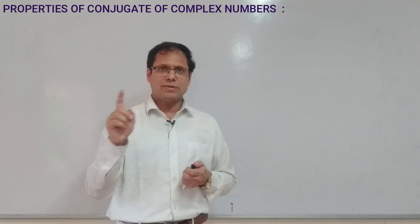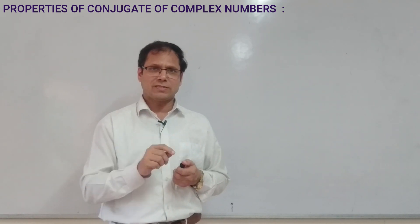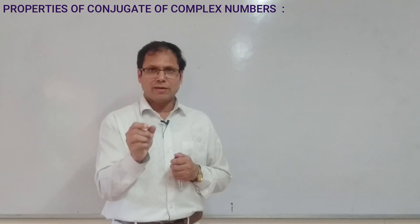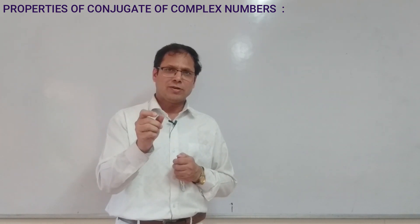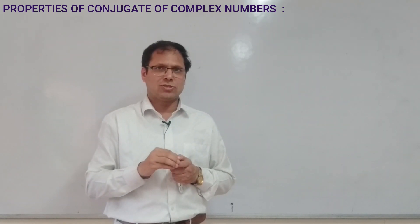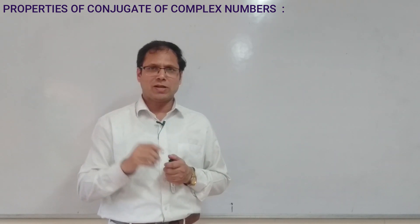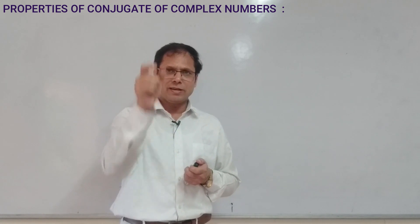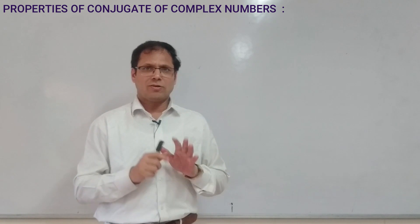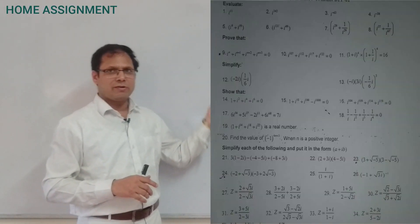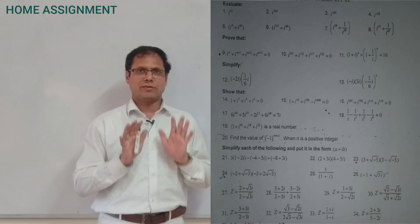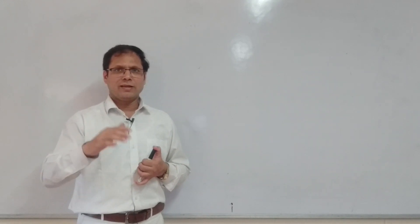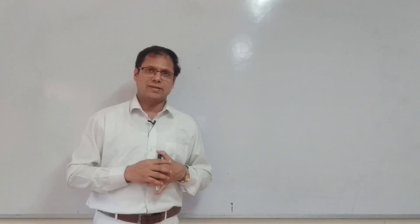A complex number has two parts: real part denoted by Re(Z) and imaginary part denoted by Im(Z). The conjugate of a plus iB is a minus iB. To express in a plus iB form when the denominator is complex, multiply numerator and denominator by the conjugate of the denominator, then separate real and imaginary parts. That's all for today's session. Next episode covers multiplicative inverse, additive inverse, and other properties of complex numbers. Goodbye, thank you.